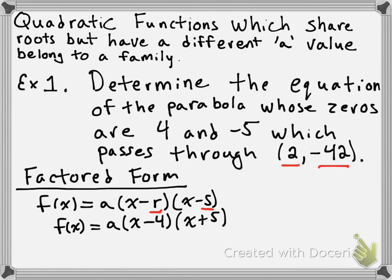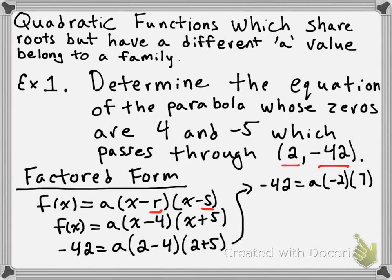So we know that the y value is going to be substituted in for f(x), and the x value is going to be substituted in for x, which is going to give us this line: -42 = a(2 - 4)(2 + 5). And 2 minus 4 gives us negative 2, and 2 plus 5 gives us 7, so we simplify that a little bit.